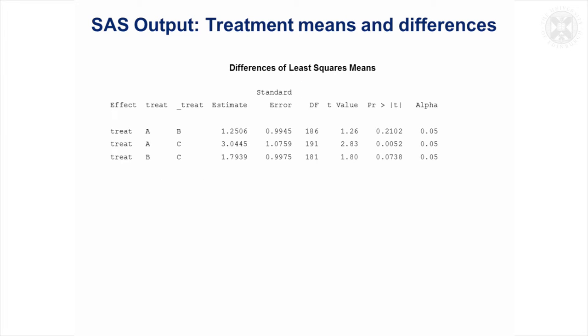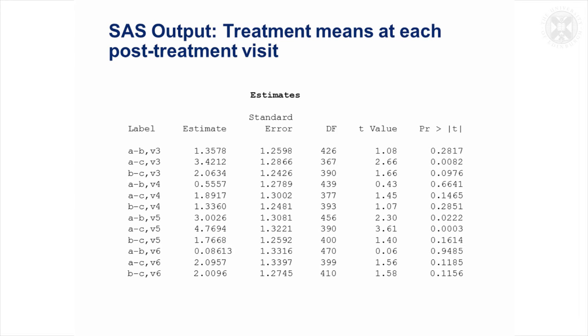I've just put the differences in the treatment effects here. And again, they've got slightly different degrees of freedom because there's different numbers of patients receiving each pair of treatments. This shows there's only a significant difference between treatments A and C. It wasn't quite significant between B and C.